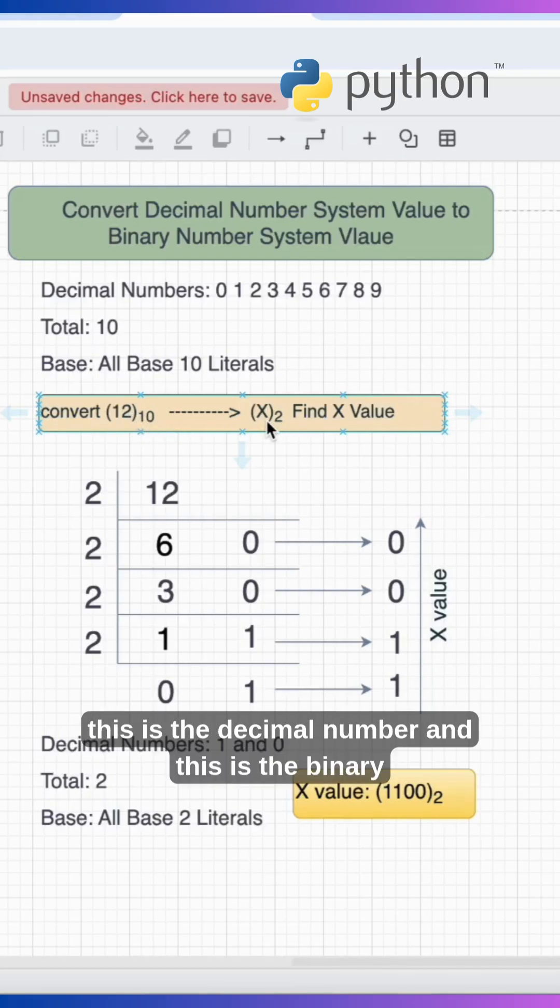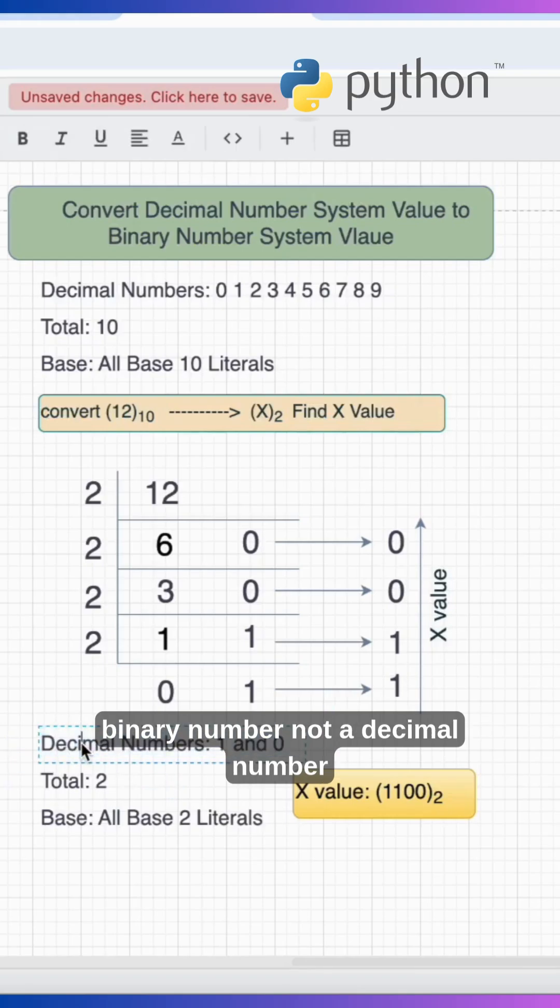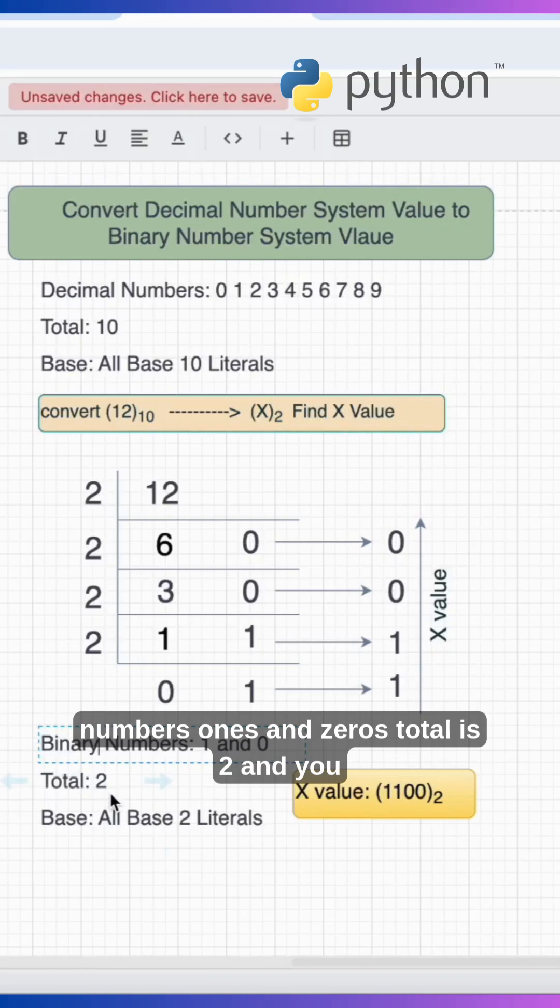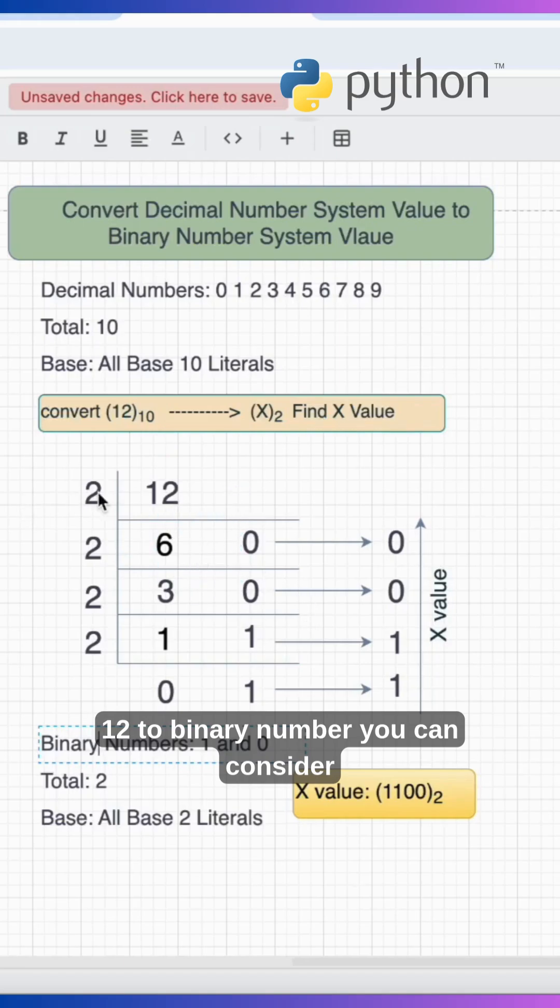Binary is base 2 - here we can see zeros and ones. This is binary number, not decimal number. Binary numbers, ones and zeros, total is 2, and you can use all base 2 literals. Now I am converting this 12 to binary number.